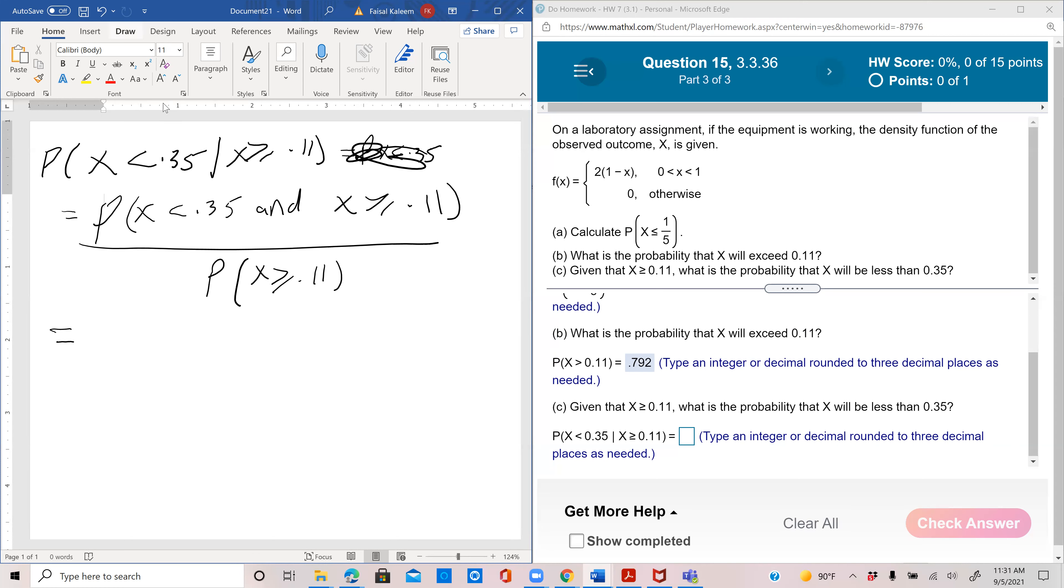Now, x less than 0.35 and greater than or equal to 0.11, we need to combine this. This would be probability x is greater than or equal to 0.11 and less than 0.35. And in the bottom we have probability that's greater than or equal to 0.11.